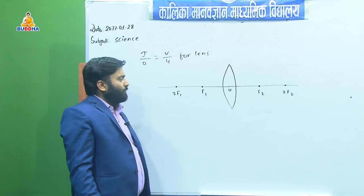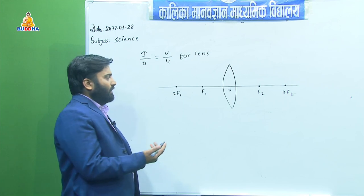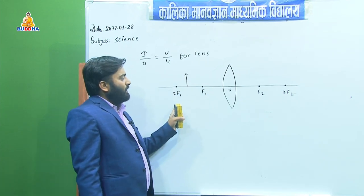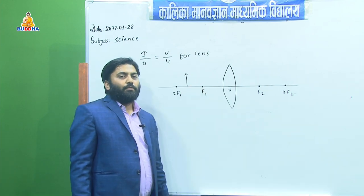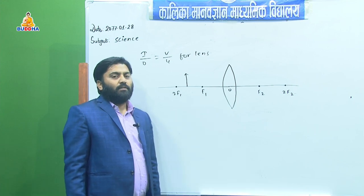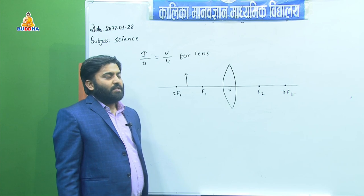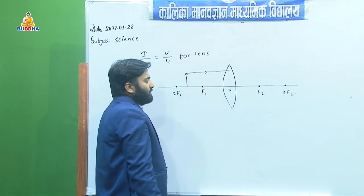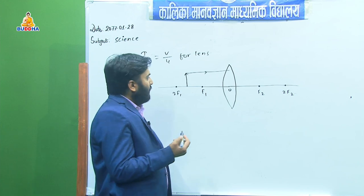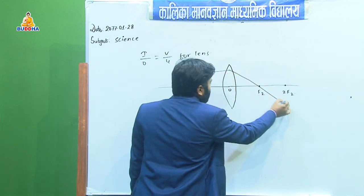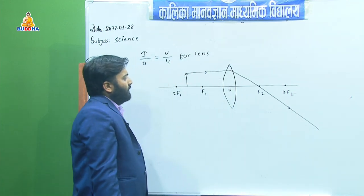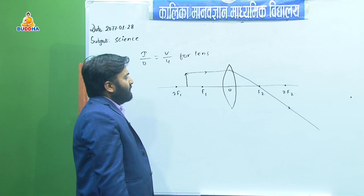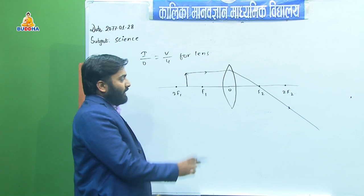To prove this we complete the ray diagram first. We place the object between F and 2F. When the object lies between F and 2F, the image is formed behind 2F on the opposite side of the lens, and the image is real. One ray of light parallel to the principal axis will always pass through the focus.